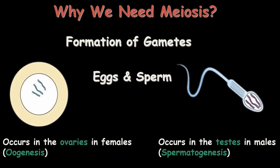Why do we need meiosis? Meiosis is needed for the production of germline cells, such as gametes — eggs and sperm cells. The production of egg cells takes place in the ovaries through a process known as oogenesis, while the production of sperm takes place in males in the testes through spermatogenesis. Both oogenesis and spermatogenesis follow the process of meiosis.